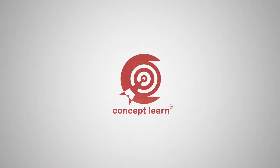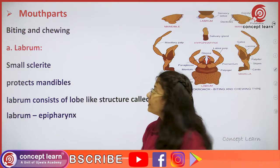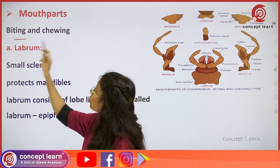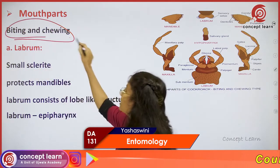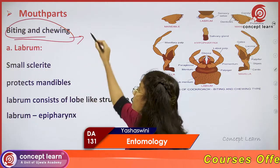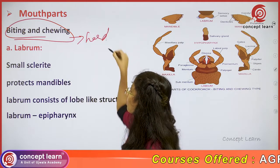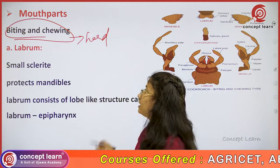Welcome to Concept Learn. Now let's see the mouth parts. These cockroaches usually will be having the biting and chewing type, as they usually prefer to feed on hard food material.